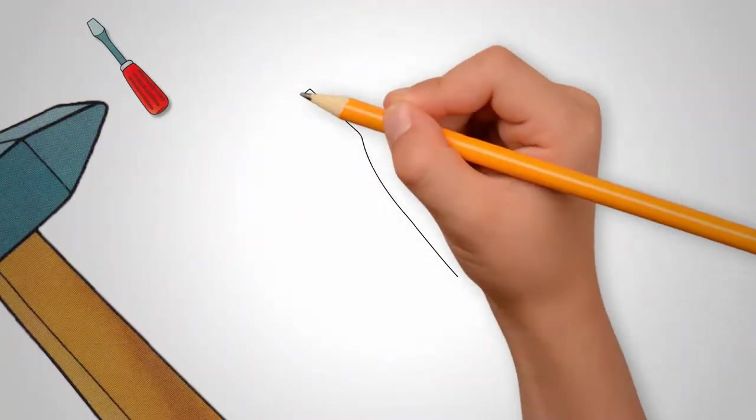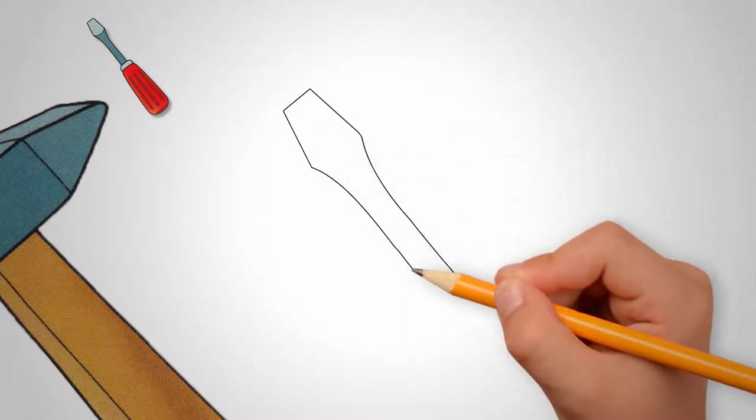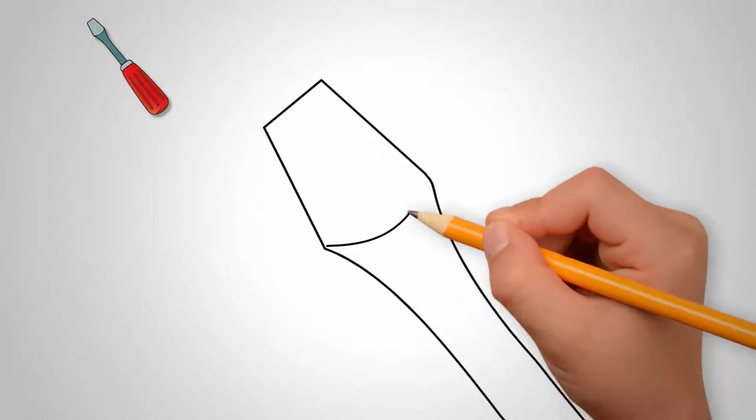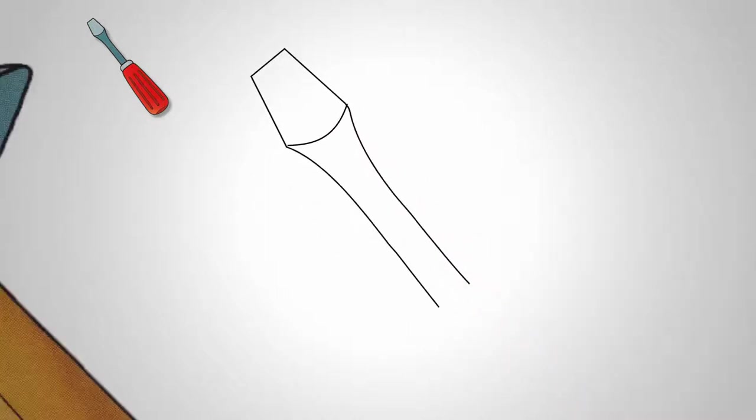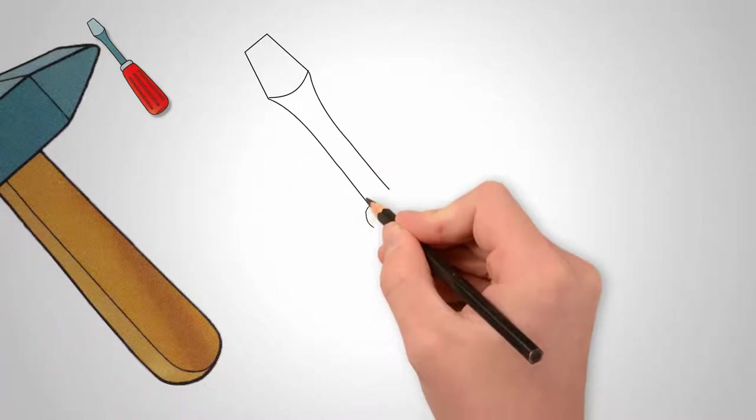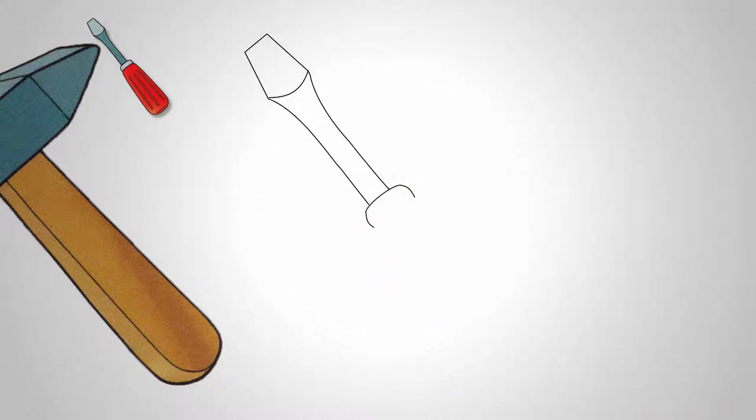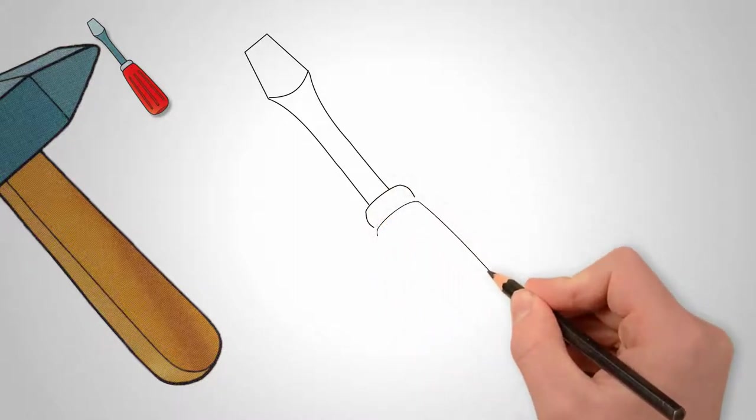Now draw a screwdriver. Draw the metal part of the screwdriver. It is long and flattened at the end. This part of the screwdriver is used for twisting or unscrewing. Next, draw the screwdriver handle. Draw a ring that connects the handle in the metal part of the screwdriver.